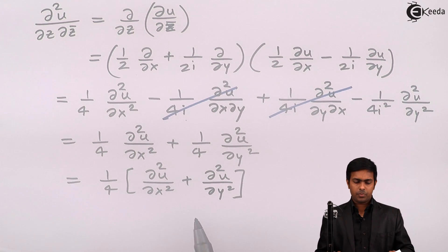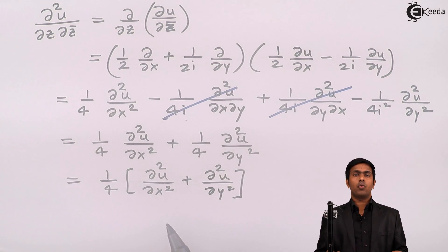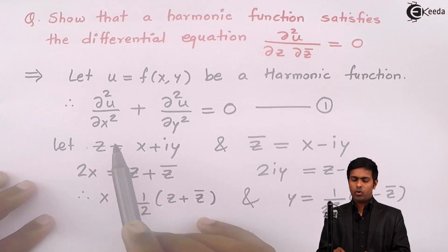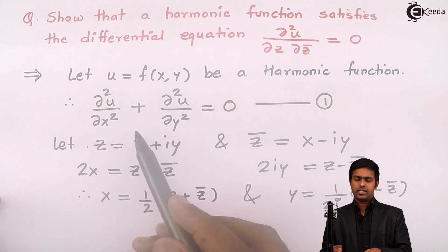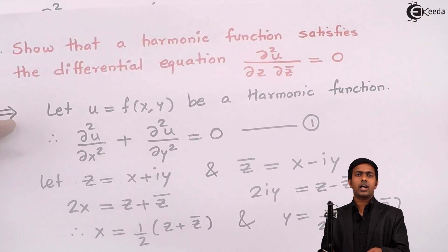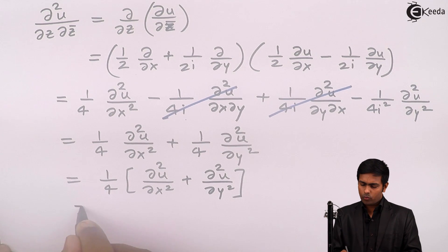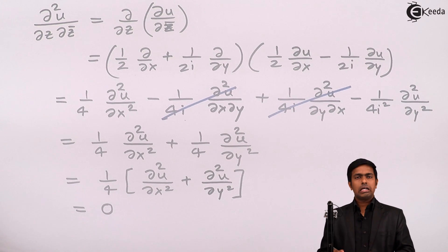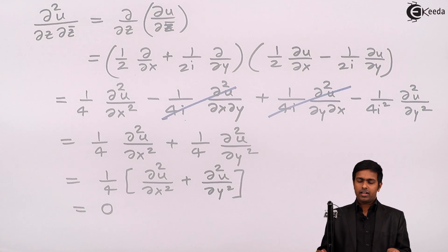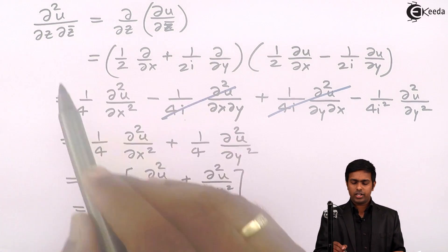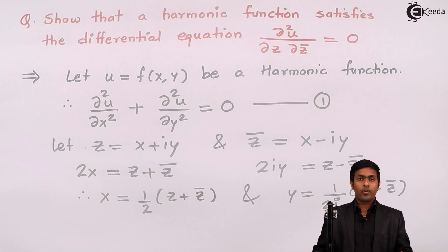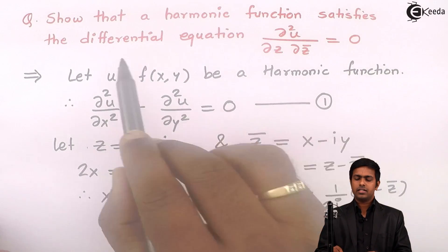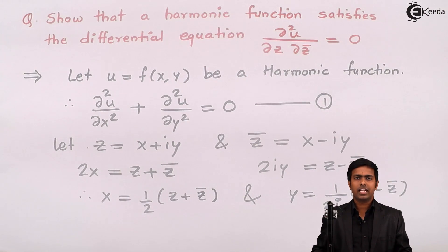To find the value of this bracket, we use equation number 1. By the Laplace equation in Cartesian form, ∂²u/∂x² + ∂²u/∂y² = 0. Therefore, ∂²u / ∂z ∂z̄ = (1/4)(0) = 0. We have proved that the harmonic function satisfies the differential equation ∂²u / ∂z ∂z̄ = 0. Thank you.